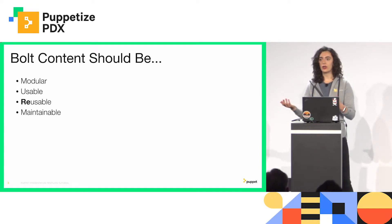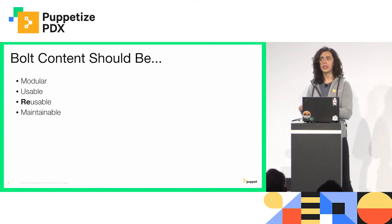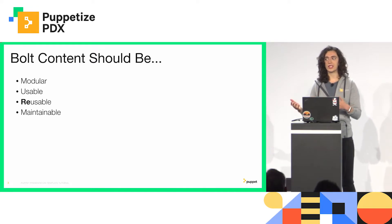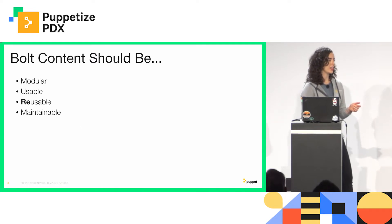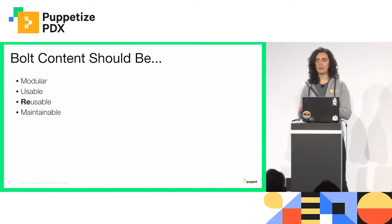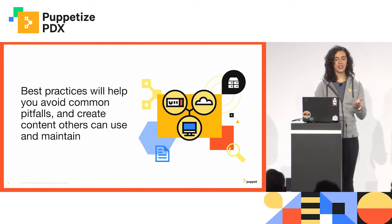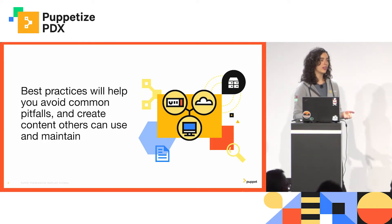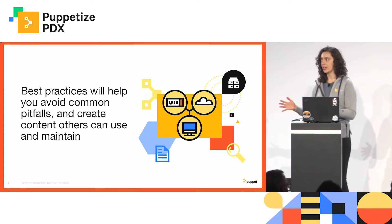Also making sure content is reusable — if I want to integrate your plan into my own workflow, am I able to repurpose it for other things? And lastly, making sure it's maintainable, either by you six months from now or by someone else in your organization — readable, understandable, following good code practices. Hopefully by the end of this talk, these best practices will help you avoid common pitfalls and create content others can use and maintain.